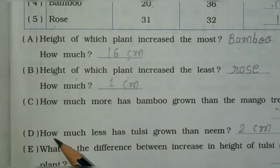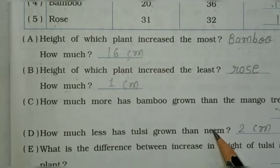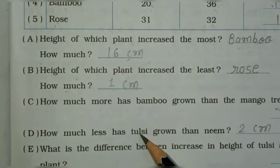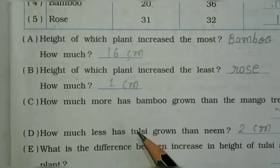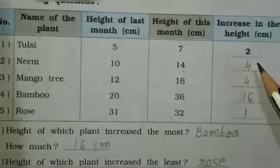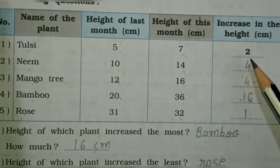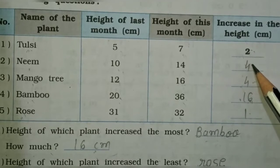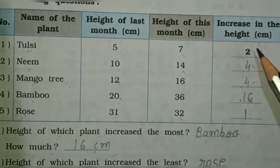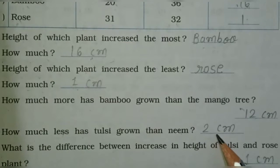Next question: how much less has tulsi grown than neem? Yani, neem se tulsi kitni kam increase hui? Neem 4 centimeters and tulsi 2 centimeters, so 4 minus 2 is equal to 2 centimeters.